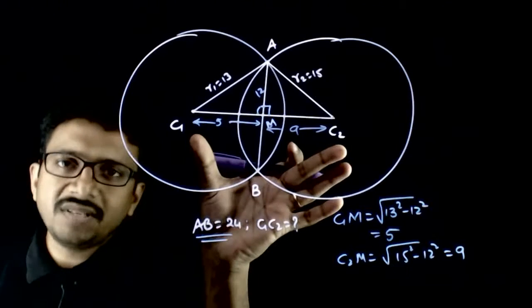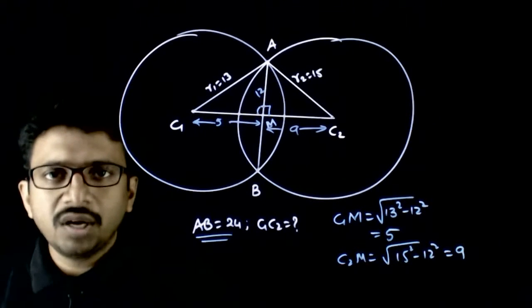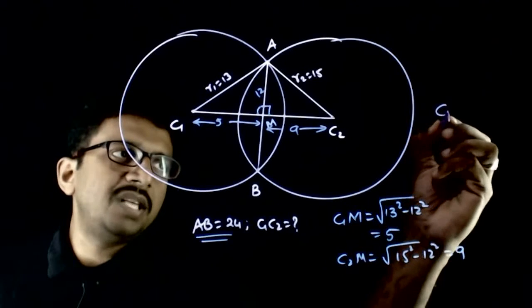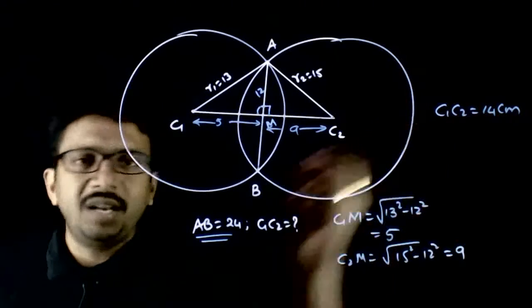Hence, the total C1C2 is equal to 9 plus 5, which is equal to 14. So C1C2 is equal to 14 centimeters.